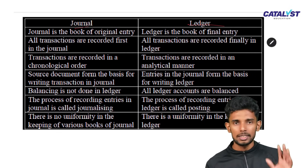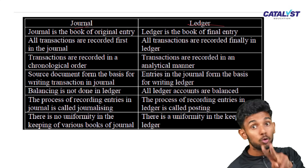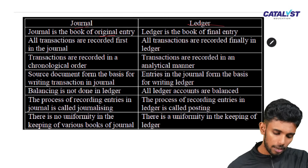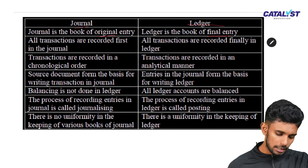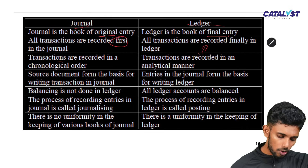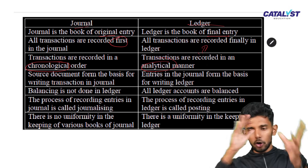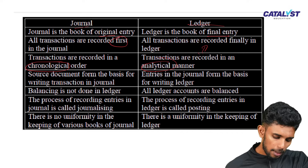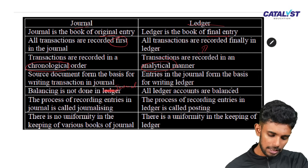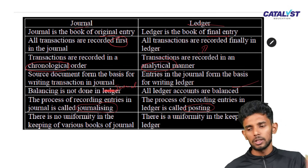Differences between journal and ledger: the journal is the book of original entry, where transactions are recorded chronologically, date-wise. The ledger is the book of secondary entry where transactions are transferred from the journal — this process is called posting. Balancing is done in the ledger, not in the journal. Adjustment entries are also done in the journal.